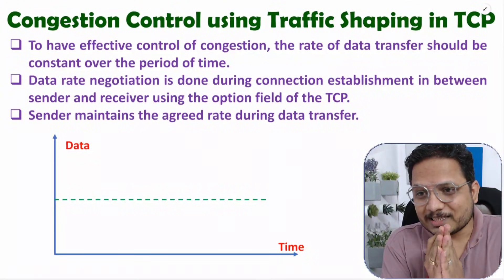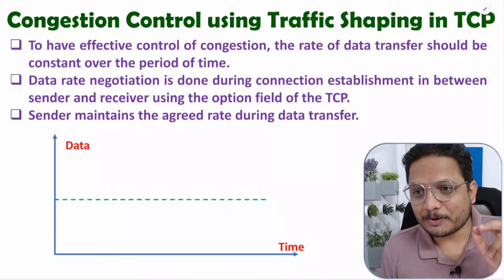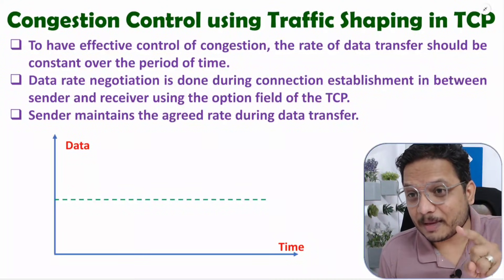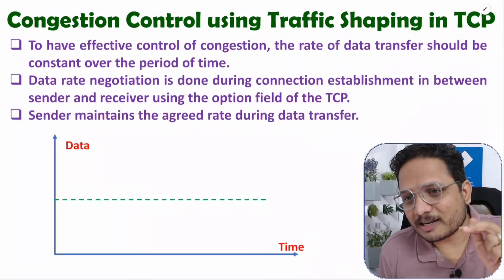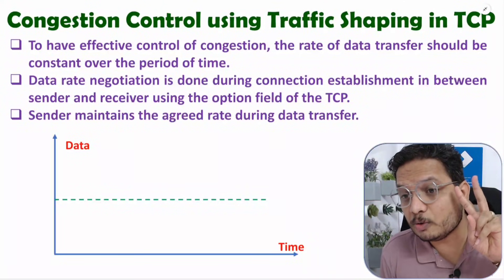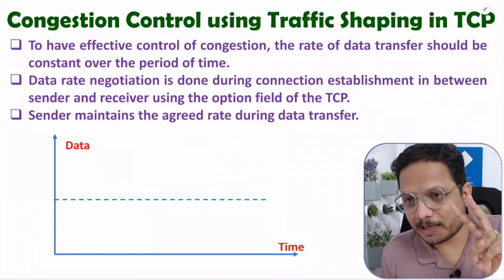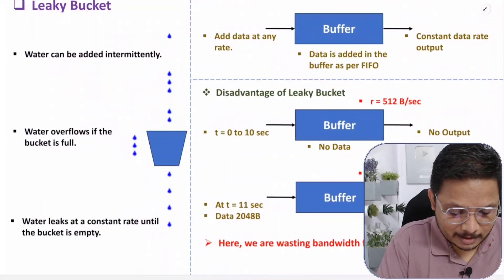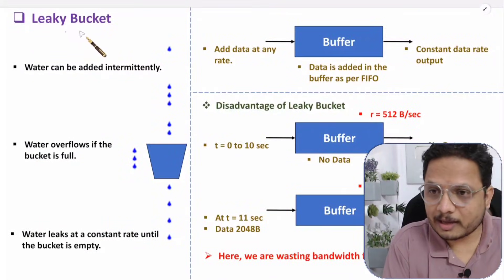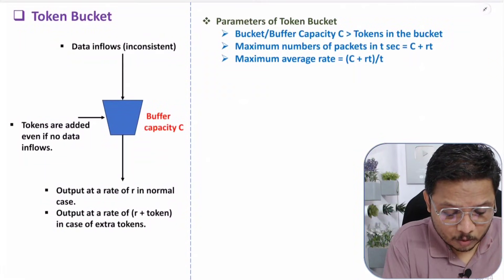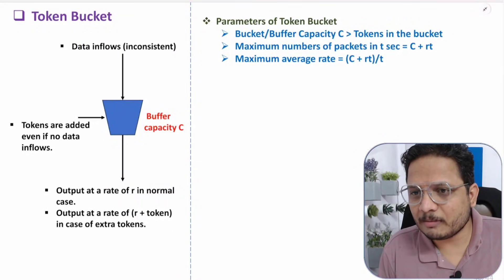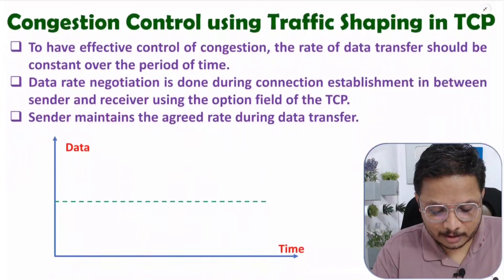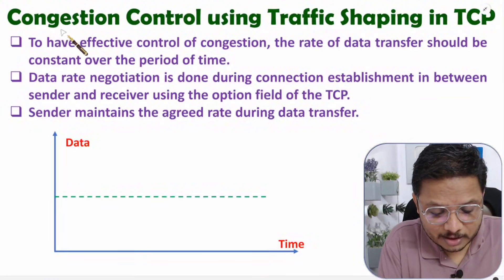Hello friends, welcome to Engineering Funder Family. In this video I'm going to explain congestion control using traffic shaping in TCP. To have congestion control using traffic shaping, there are two algorithms in TCP: the leaky bucket algorithm and the token bucket algorithm. I'll explain both algorithms along with practical examples to give you more clarity. First, you need to understand the basics of congestion control using traffic shaping.